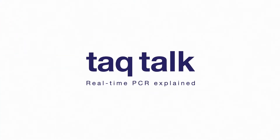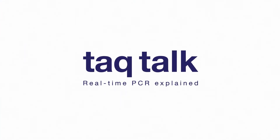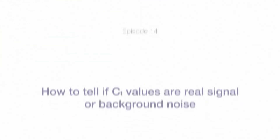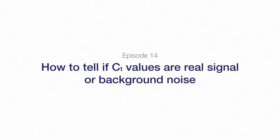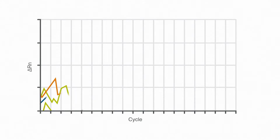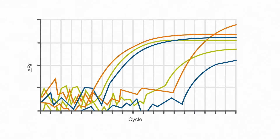Welcome to the Applied Biosystems TAC Talk video series, where we break down real-time PCR to make it easier for you. Sometimes when you're running qPCR experiments, it can be difficult to distinguish real signal from background noise. Unexpected or variable CT values can leave you wondering whether your data are reliable. It's a common problem, so let's talk about useful tips on how to tell whether your CT values are real signal or background noise.